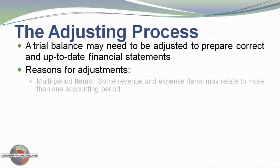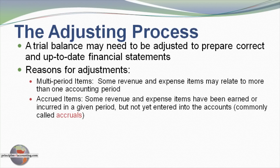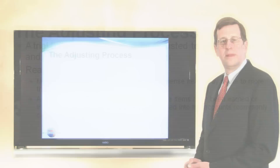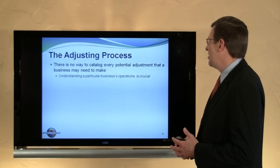Let's look closer at the reason for adjustments. Multi-period items is one example — some revenue and expense items may relate to more than one accounting period. Prior to preparing financial statements, it's necessary to apportion those items to the appropriate accounting periods. Other items are said to be accrued items: revenues or expenses that may have been earned or incurred in a given period but not yet entered in the accounting records, commonly called accruals.